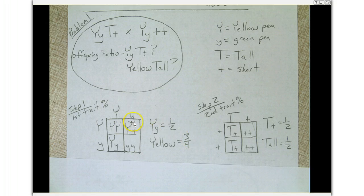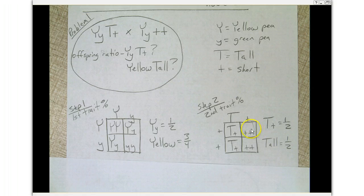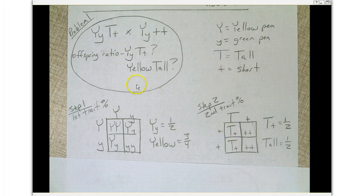Now that we've analyzed the first trait, we're going to analyze the second trait. We have big T little t crossed with little t little t. Making a Punnett square, we find that the probability of big T little t in the offspring is 50%. Tall will also be 50% as well.